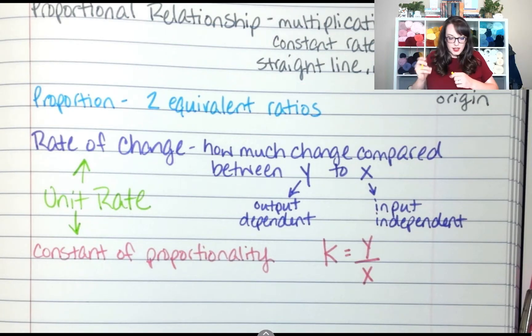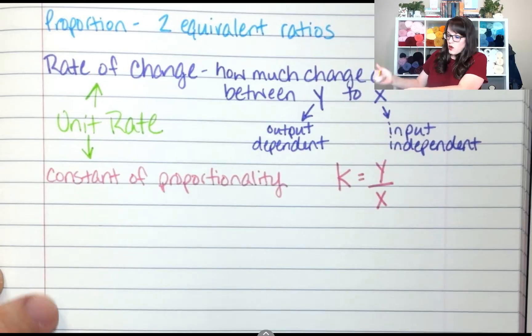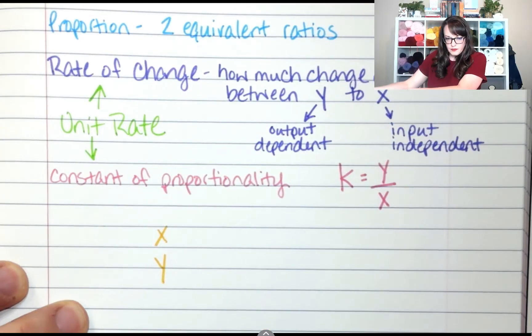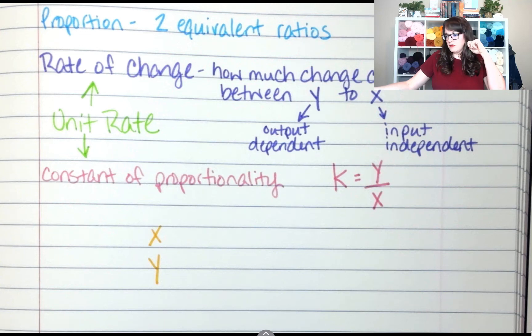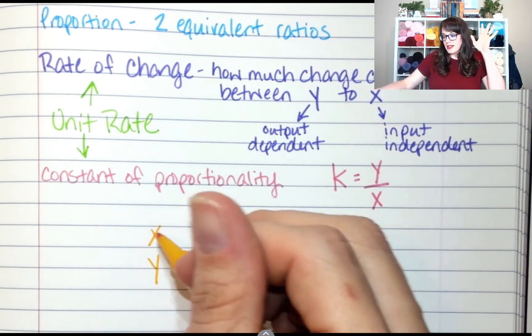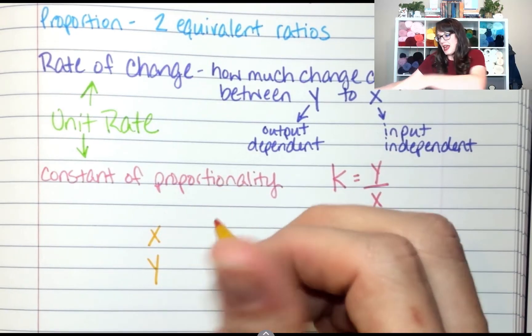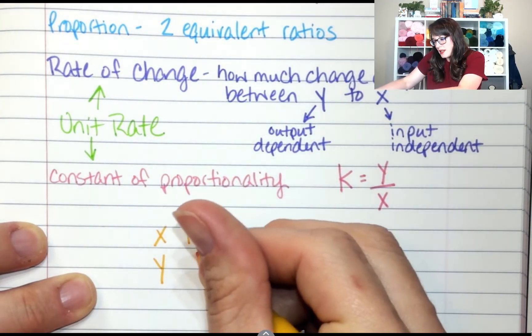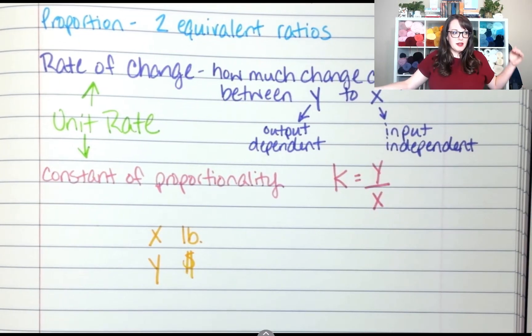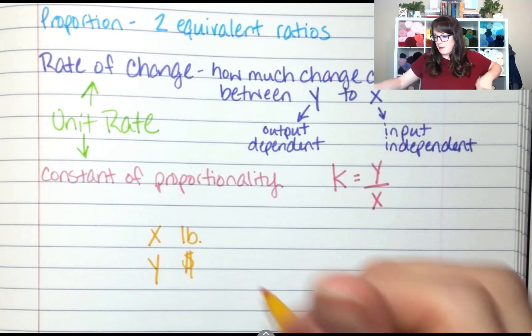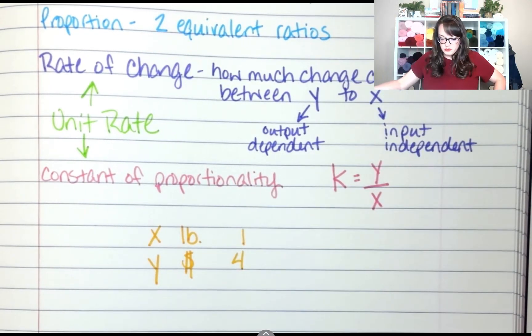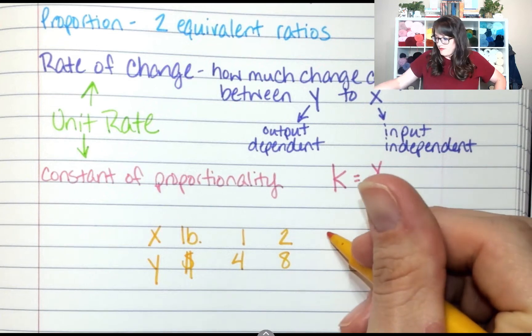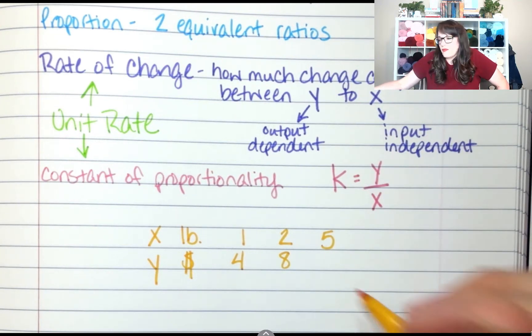So moving on if I am going to the store and let's say I'm going to buy hamburger meat so I've got x and y. Which one is independent? The x. Okay so this is going to be if I'm buying hamburger meat then x is how many pounds and we put lb for pounds and y is going to be money because how much money I spend depends on how many pounds I buy.